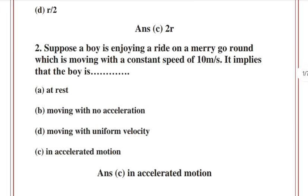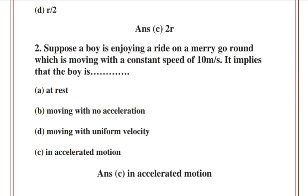Question 2: Suppose a boy is enjoying a ride on a merry-go-round which is moving with a constant speed of 10 meters per second. It implies that the boy is? Answer C.